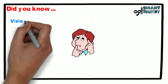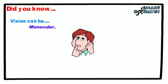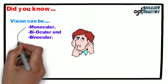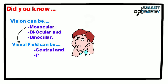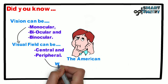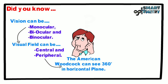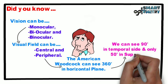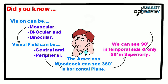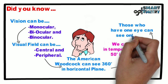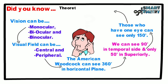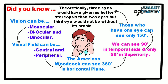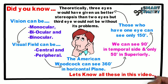Did you know vision can be monocular, biocular, and binocular? The visual field can be central and peripheral. The American woodcock can see 360 degrees in the horizontal plane. We can see 90 degrees on the temporal side and only 50 degrees superiorly. Those who have one eye can see only 150 degrees. Theoretically, three eyes would have given us better stereopsis than two eyes, but the third eye would not be without its problems. Let us explore all this in this video.